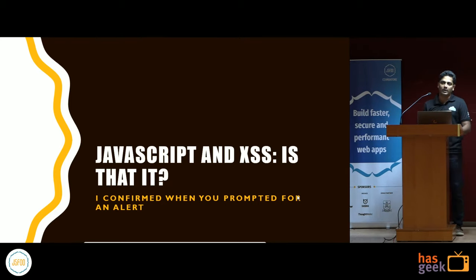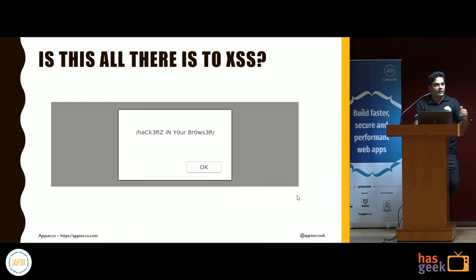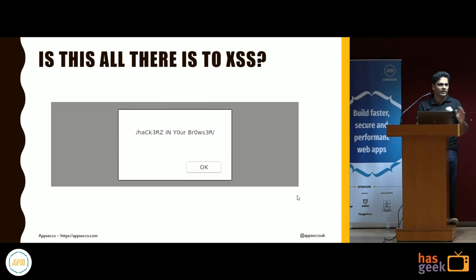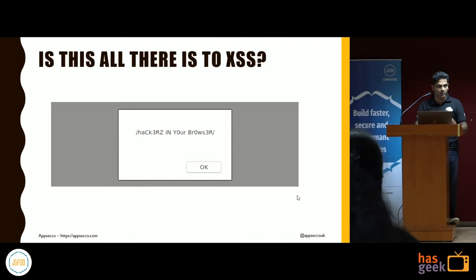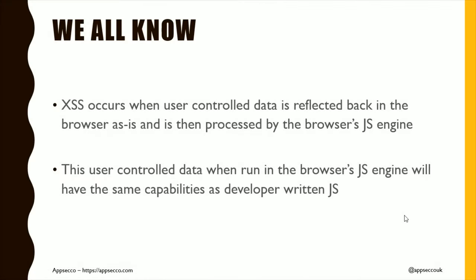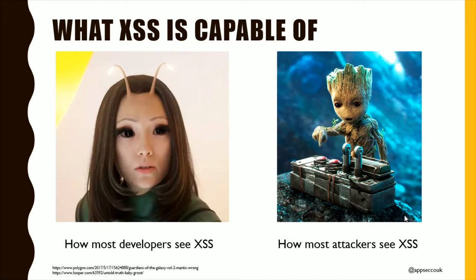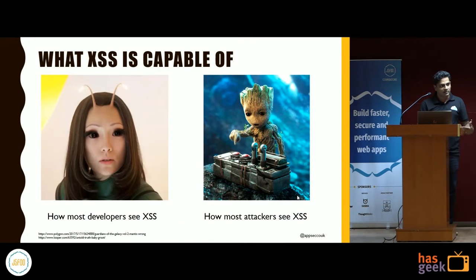Let's start with the most common attacker view of JavaScript — XSS. A lot of times when we spoke to developers, even when findings are in a report, the proof of concept is normally presented as an alert box. But is that all there is to a cross-site scripting attack? Definitely not. XSS occurs when user-controlled data ends up reflected back to the page and is processed by the browser's JS engine, giving it the same capabilities as any JS executing inside the browser context. Most developers look at JS and think it's as benign as Mantis, but attackers see it as really, really powerful.